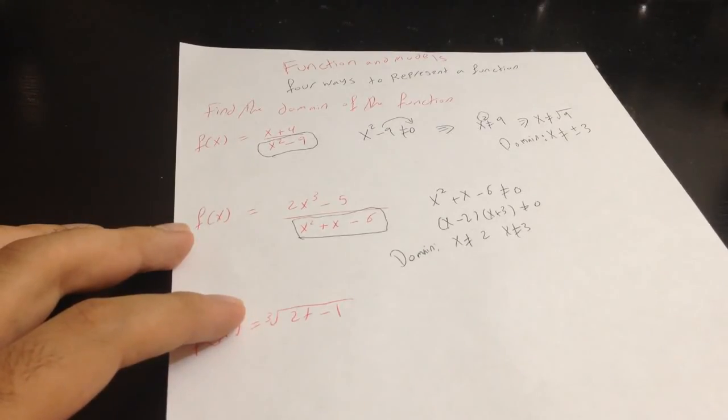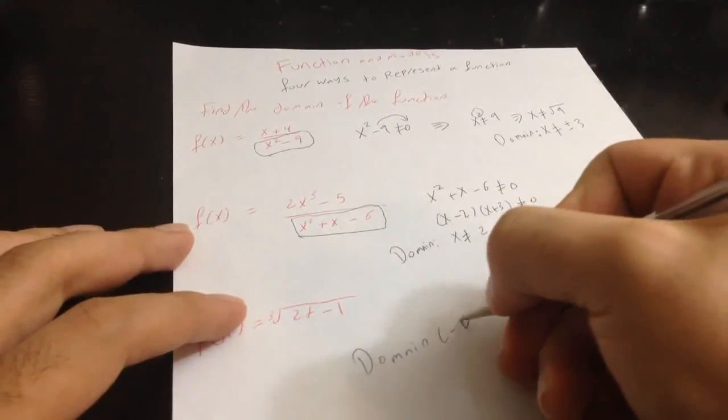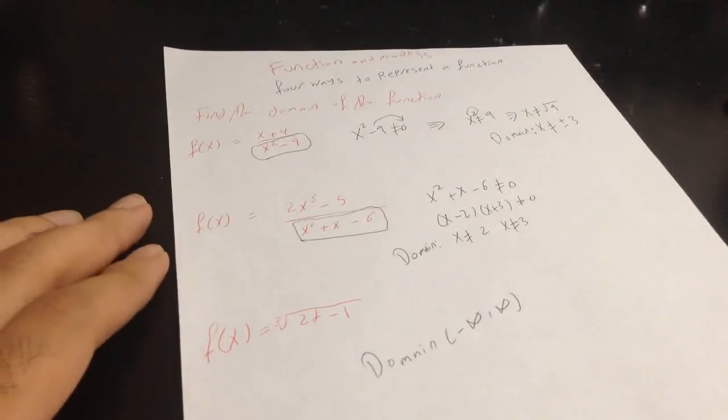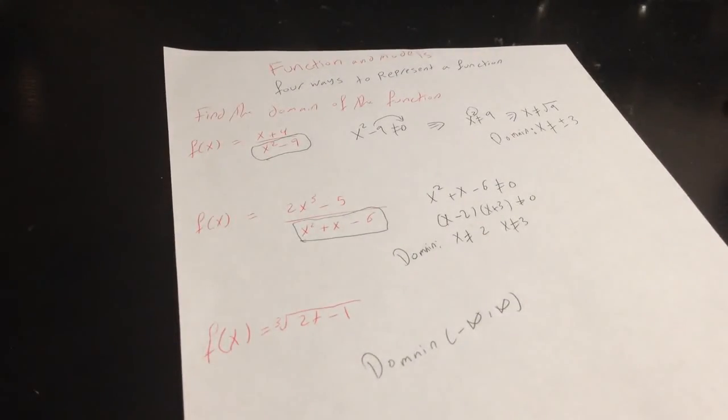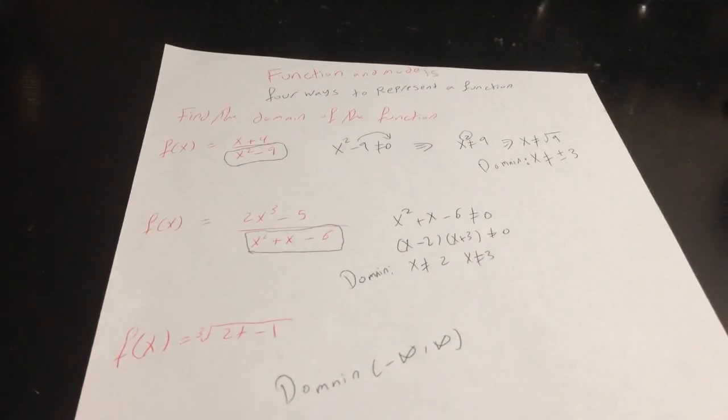our domain should be from minus infinity to infinity, because let me write it down. Because we have cube root, which will give us the direction of negative or positive, we will say our domain is from minus infinity to infinity. That's all for today. Thanks for watching. Please subscribe.